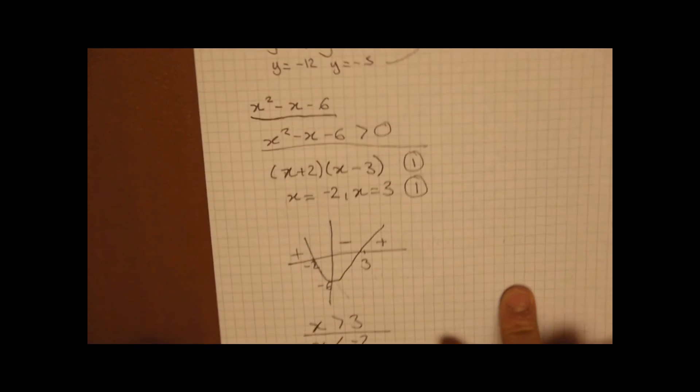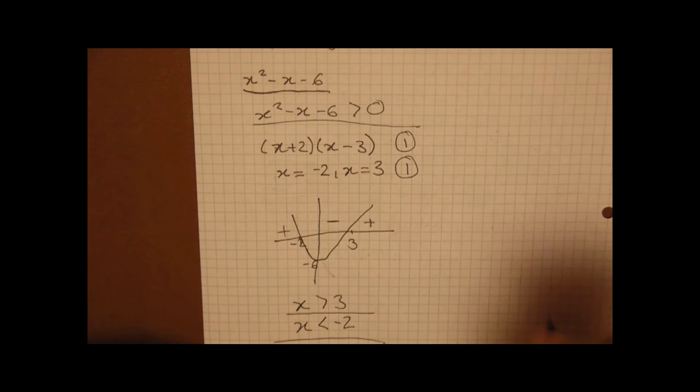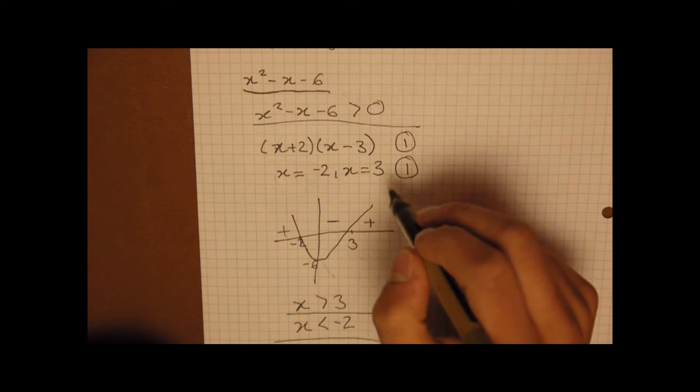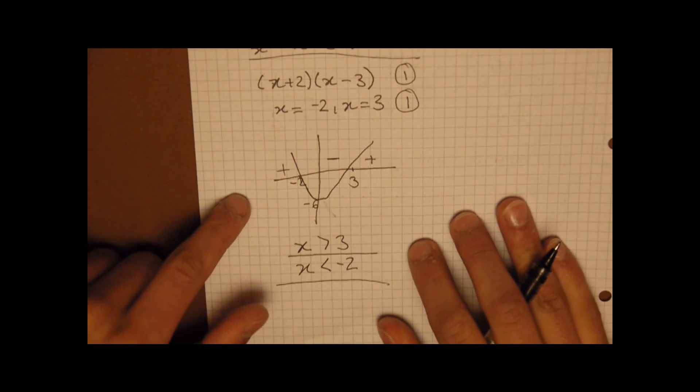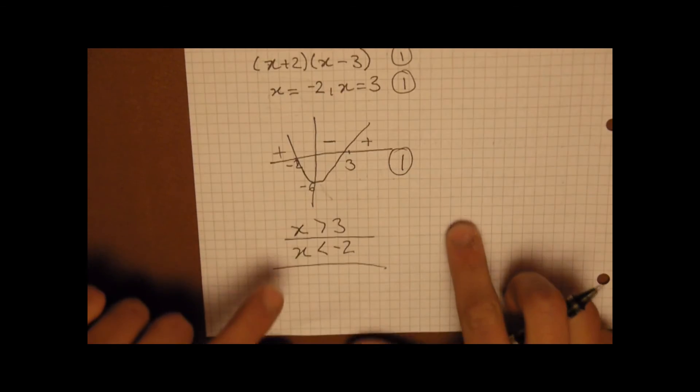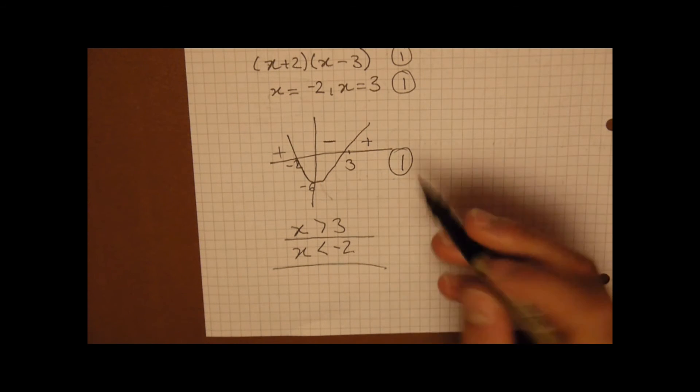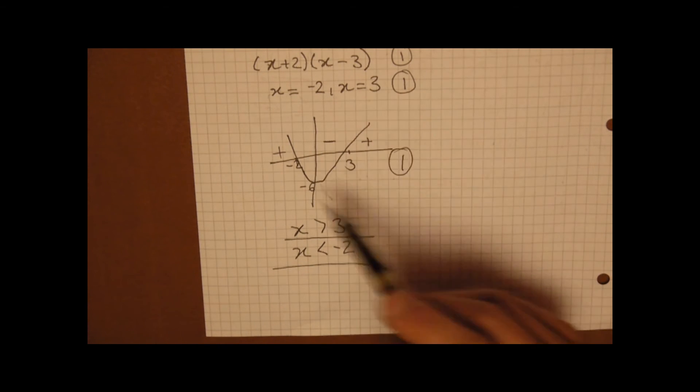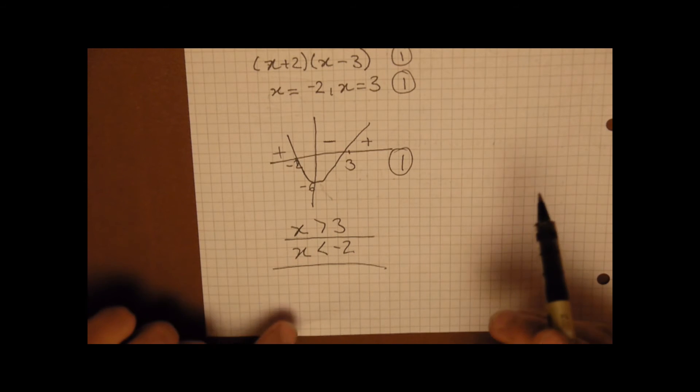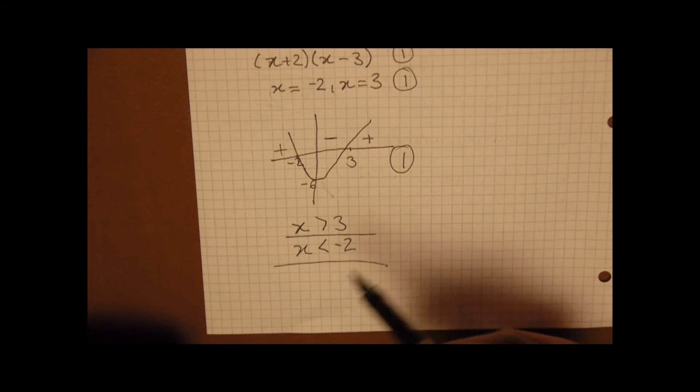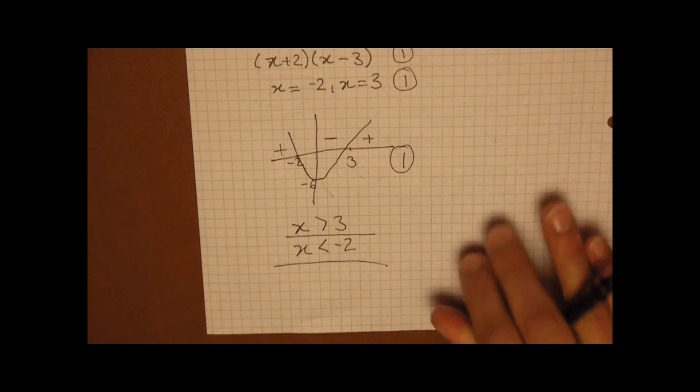Just to recap on that. When you have your quadratic inequality, you factorize it and then work out your x terms. Then you plot a sketch graph, which is worth another mark. And then you work out at which points on the graph actually satisfy the inequality. And then from that, you can write it in order to solve the inequality.